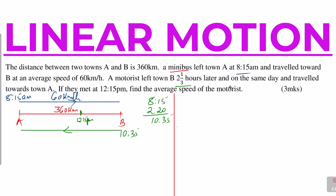The first thing we're going to do is get the distance traveled by the minibus by the time the motorist was beginning the journey. The minibus left at 8:15 and the motorist left at 10:35. Distance is given by speed times time. The speed of the minibus is 60 kilometers per hour, and the time from 8:15 to 10:35 is two and a third hours.